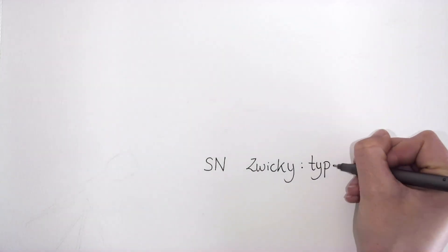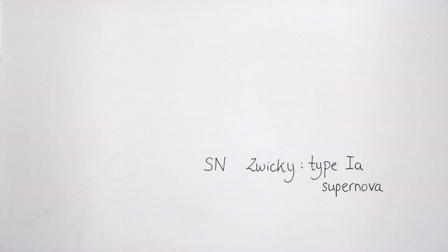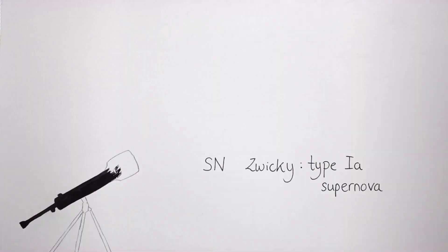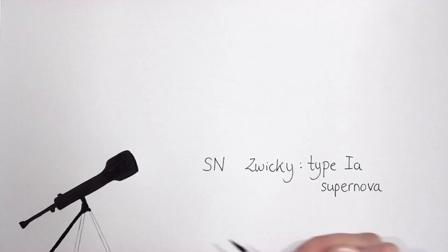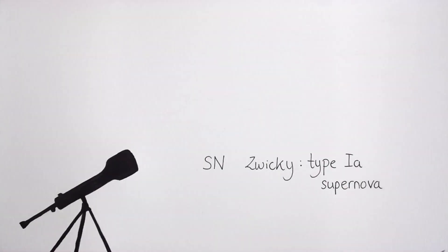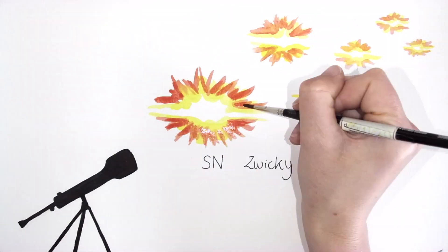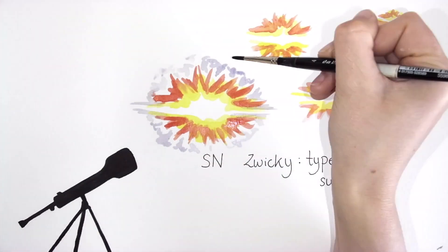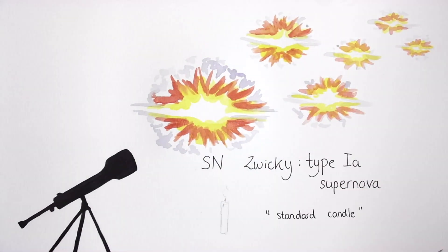Supernova Zwicky belongs to a special class of supernovae called Type Ia Supernovae. These stellar explosions always occur in a similar way, giving them a similar brightness. Type Ia Supernovae are an important tool for measuring cosmic distances. The fainter they appear, the further away they must be. That's why we call them standard candles.